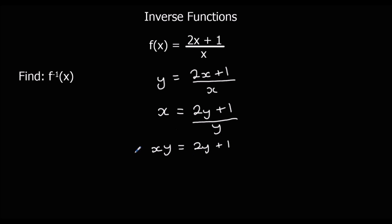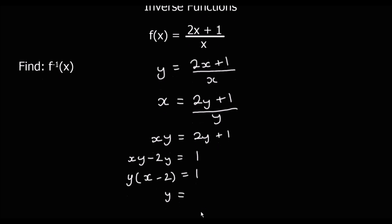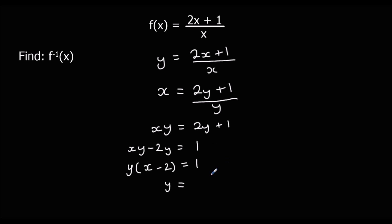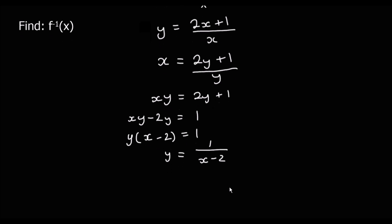We're going to get the y's on the same side, so I'm going to take 2y across. Then I need to factorize out the y, so y times (x minus 2) equals 1. Divide by (x minus 2), giving y equals 1 over (x minus 2). So the inverse function, f⁻¹(x), is 1 over (x minus 2).